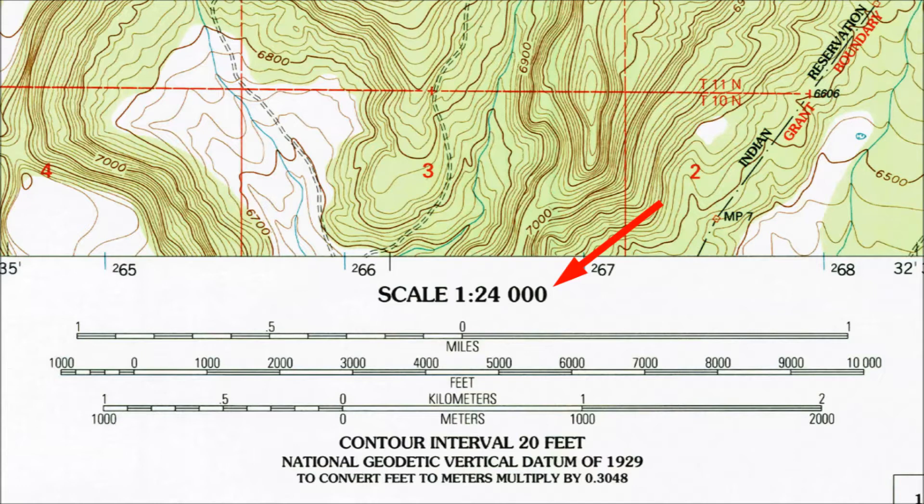This map is telling you that one inch on the map is 24,000 inches in the real world. The same ratio applies to centimeters or even cubits. The scale of a paper map is independent of the unit of measurement you use.